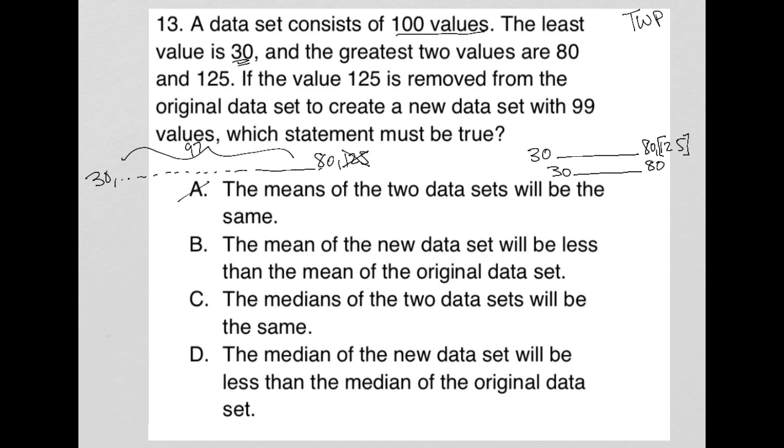Choice B, the mean of the new data set will be less than the mean of the original data set. I like that, right, because we're removing 125. So I like that. I think that's the right answer. But let's look at the rest here.